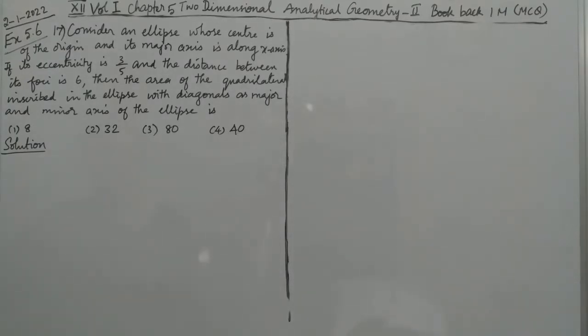Problem 5.6, question number 17. Consider an ellipse whose center is at the origin and its major axis is along the x-axis. If its eccentricity is 3/5 and the distance between its foci is 6, then the area of the quadrilateral inscribed in the ellipse with diagonals as major and minor axis of the ellipse is what? This is the problem.